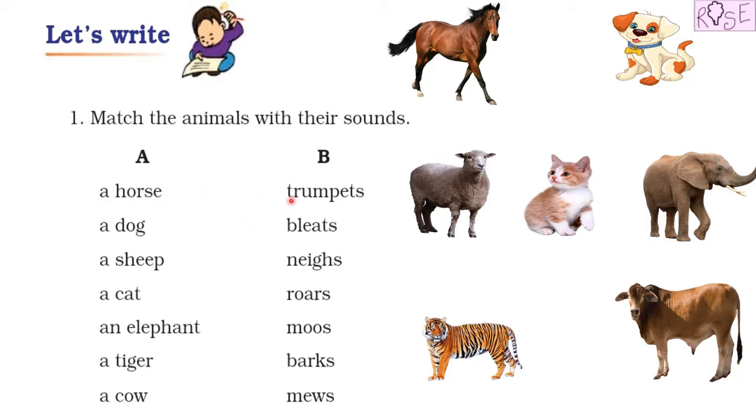For example, a horse does not trumpet. So we have to find the animal which trumpets from this list. I have also added the picture of these animals. Once we find out what sound which animals make, we will write the sound under the picture of the particular animal.